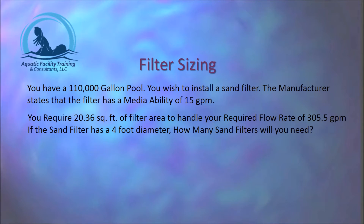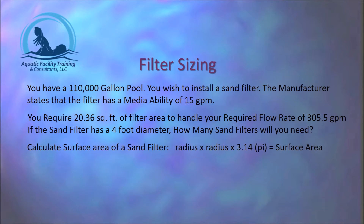Same pool — 110,000 gallons. Installing a sand filter, we require 20.36 square feet of filter area to handle our 305.5 gallon per minute flow rate. The sand filter we are interested in installing has a 4-foot diameter. How many sand filters must we install in order to handle that flow rate? First, we calculate the surface area of the sand filter using the formula pi r squared — radius times radius times pi, which is 3.14.